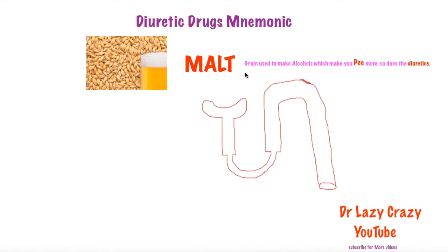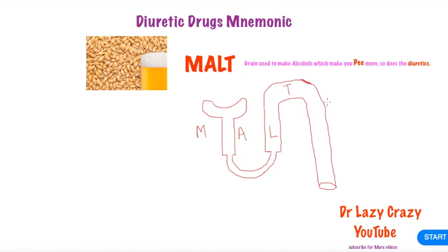Here is our kidney and nephron structure. Now we're going to apply our mnemonic onto the nephron. I'll write the letters of MALT at corresponding locations: M goes here, A goes here — the smaller tubules we don't focus on much in pharmacology — then L goes here, and T goes here, followed by the collecting tubules.